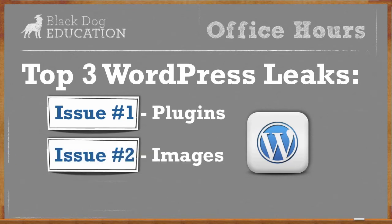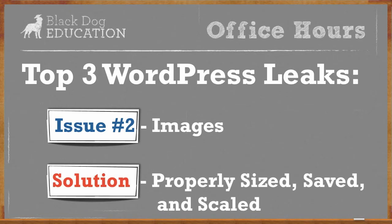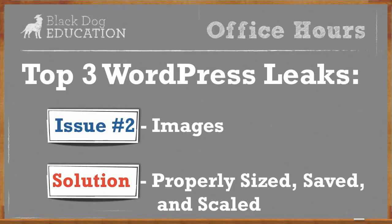The second thing we're going to talk about is images. We want to make sure they're properly sized, saved, and scaled. Properly sized means using images for the web at 72 DPI. For example, if you have a logo from your printer, printers use files at 300 DPI or above — make sure you get a saved-down version. Properly saved means using the correct format: GIF, JPEG, or PNG. And properly scaled means loading a small image rather than a large one that gets crunched down, which makes for a faster load time.